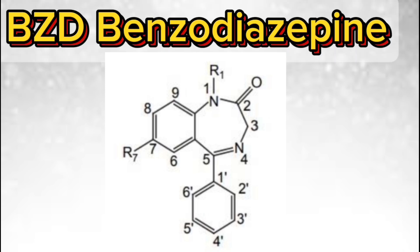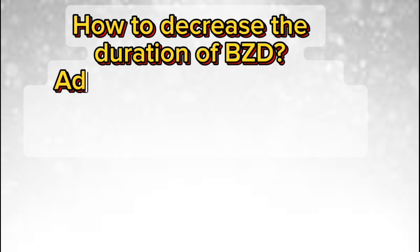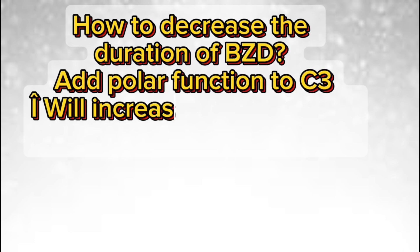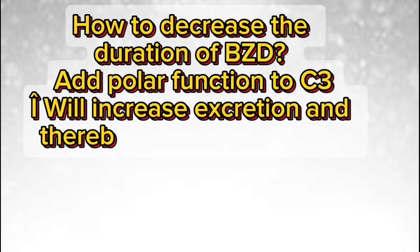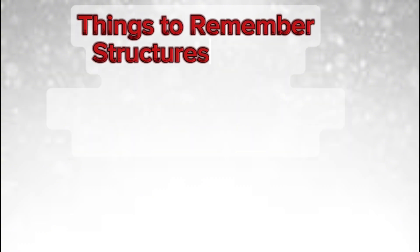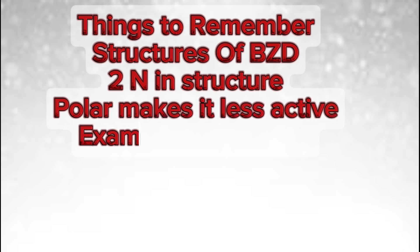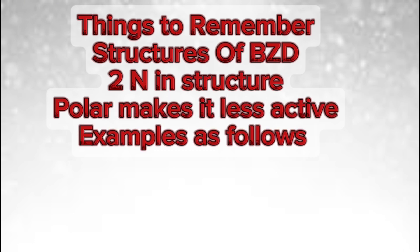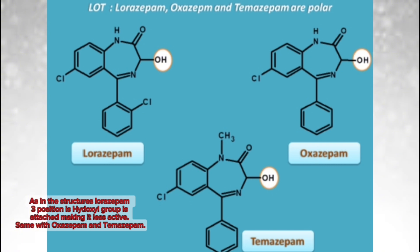This is the structure of benzodiazepine (BZD). To decrease the duration of BZD, add a polar functional group to C3 — this will increase excretion and thereby decrease duration. Things to remember: in the BZD structure, a polar group makes it less active. For example, lorazepam has a hydroxyl group at position 3, making it less active — same with oxazepam and temazepam.